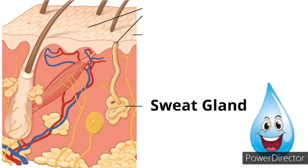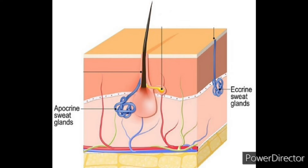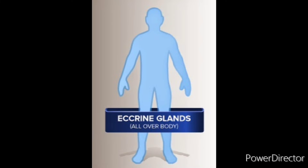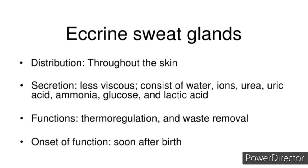Next up, let's take a look at our sweat glands. These can either be attached to a hair follicle or an independent structure altogether. There are two different types of sweat glands: apocrine and eccrine. The apocrine glands are always going to be found attached to a hair follicle, while the eccrine glands are independent standalone structures located throughout the entire body. The secretions from eccrine glands consist mostly of water, ions, urea, uric acid, ammonia, glucose, and lactic acid. They function for thermal regulation and waste removal, and they usually start to operate shortly after birth.